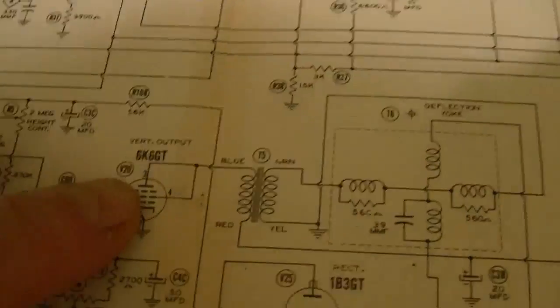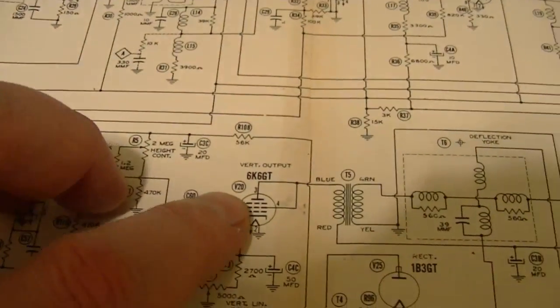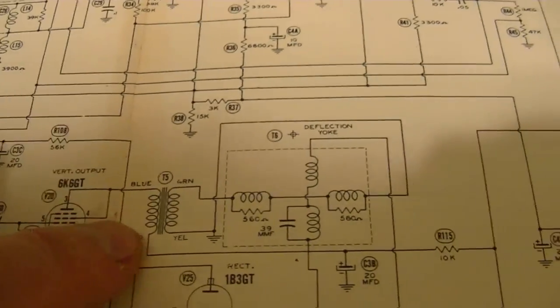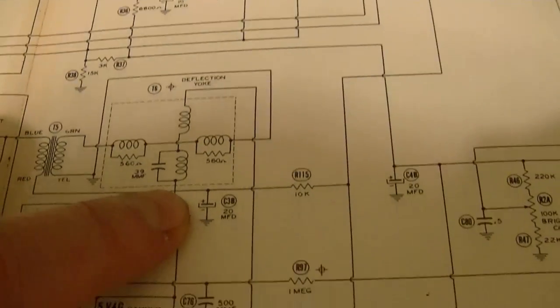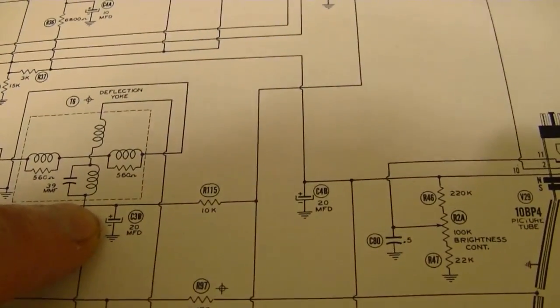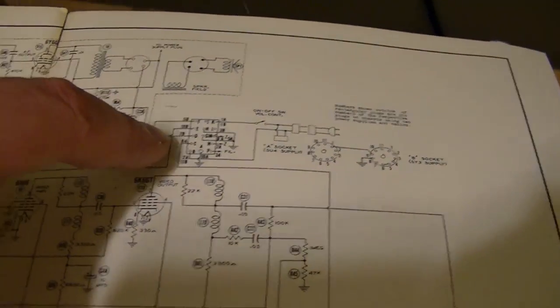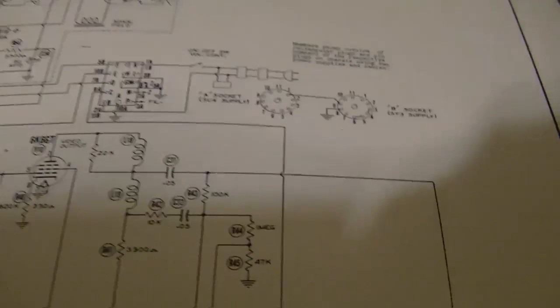Now, where does that voltage come from? Well, pins 3 and 4 go to the vertical output transformer, primary goes over here. We've got an electrolytic cap filter and a 10K resistor, and then it goes to a connector on the power supply.